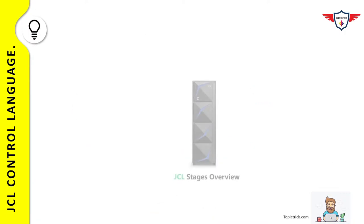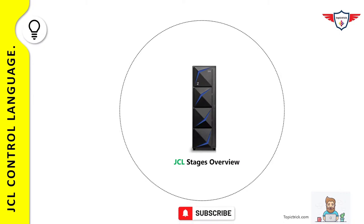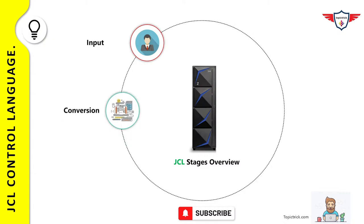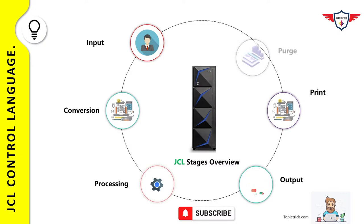Understanding the different stages of JCL will help you visualize what happens behind the scenes when you submit a job on the mainframe. During the life of a job, JES2 and the base control program of z/OS control the different phases of overall processing. The job queues track jobs that are waiting to run, currently running, waiting for output, or waiting to be purged. Generally, a job goes through six stages: input, conversion, processing, output, print, and purge.